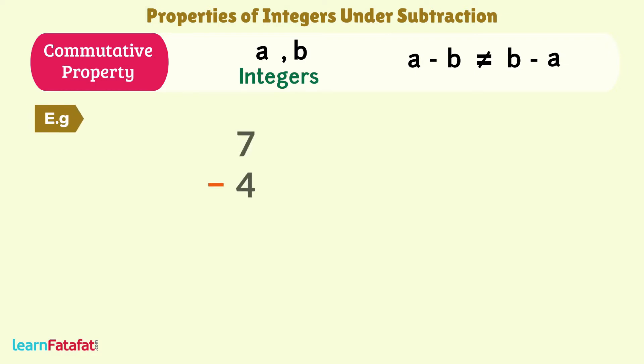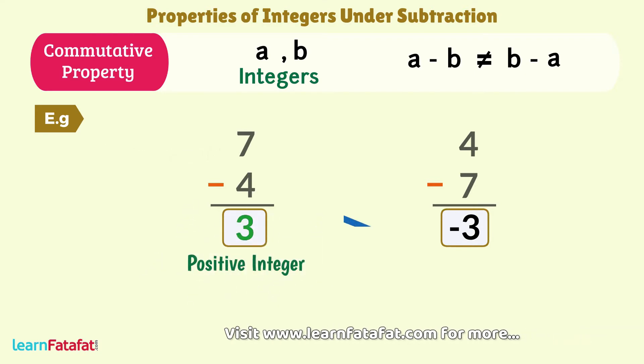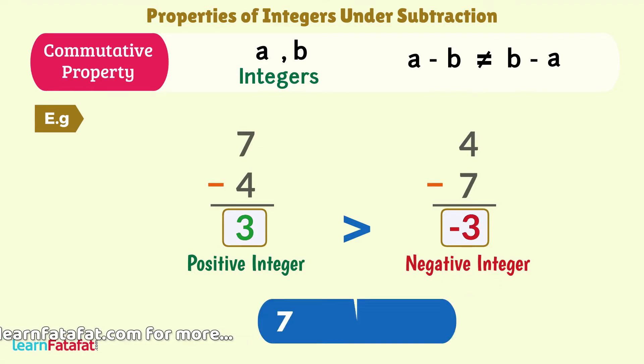For example, 7 minus 4. Solving this in the given order, the result is 3. But after changing the order, that is 4 minus 7, gives minus 3 as result. 3 and minus 3 are not the same. 3 is a positive integer which is greater than the negative integer minus 3. So, 7 minus 4 is not equal to 4 minus 7. Hence, subtraction of integers is not commutative.